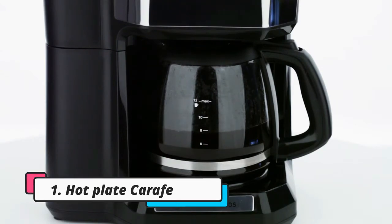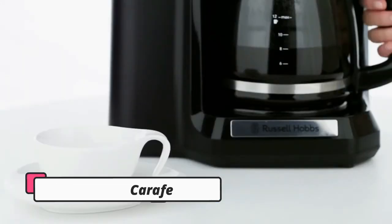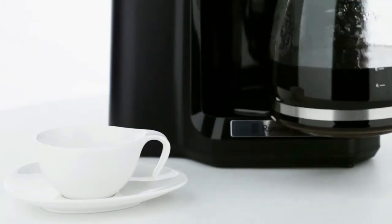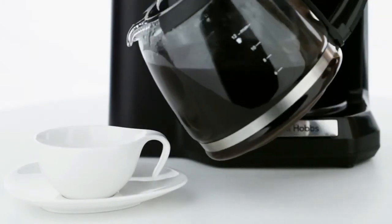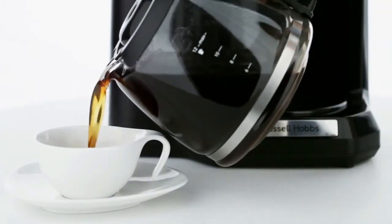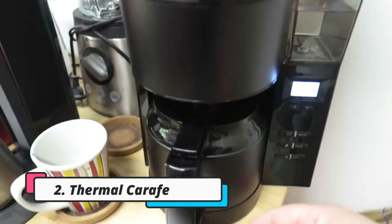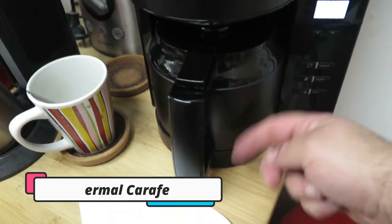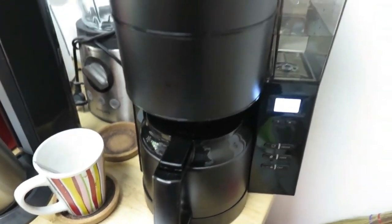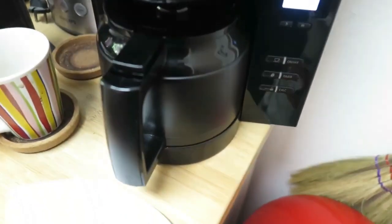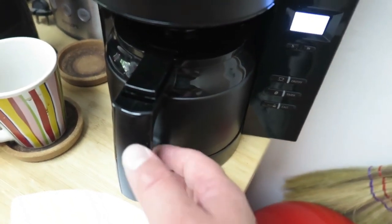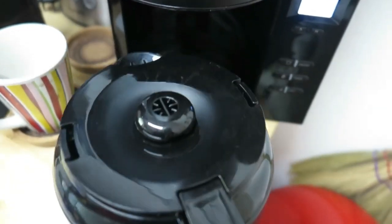First, a hot plate carafe like that of the Russell Hobbs 22000, which can impair the taste of the coffee after 15 minutes due to constant heating from the hot plate below. And second, thermal carafe like that of the Melita 1021-13, which keep the coffee hot in an insulated stainless steel carafe, preventing its taste from being impaired.